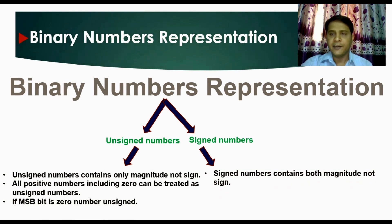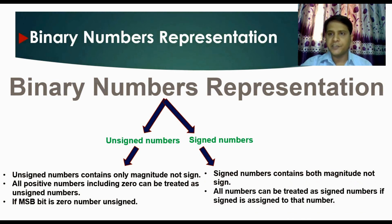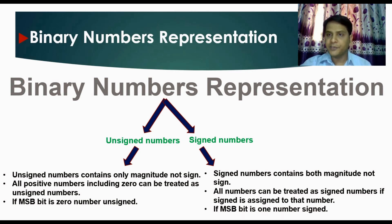Signed numbers contain both magnitude and the sign. All numbers can be treated as signed numbers if a sign is assigned to that particular number. If the MSB bit is one, the number is signed; if the MSB bit is zero, the number is unsigned.